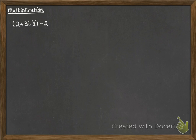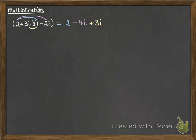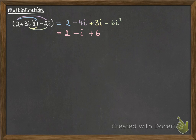We can also multiply complex numbers. Think about multiplying out two brackets with any kind of algebra. So we do 2 times 1 is 2, 2 times minus 2i is minus 4i, 3i times 1 is 3i, and 3i times minus 2i is minus 6i squared. Tidying that up: we have 2, then minus 4 plus 3 gives us minus i, and since i squared equals minus 1, minus 6 times minus 1 is plus 6. The 2 and the 6 together make 8, so we get 8 minus i.